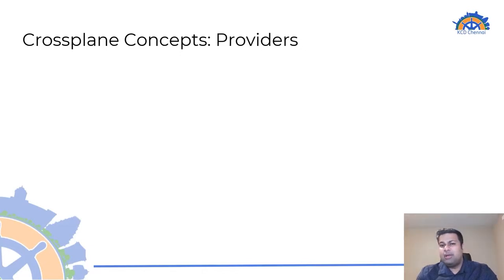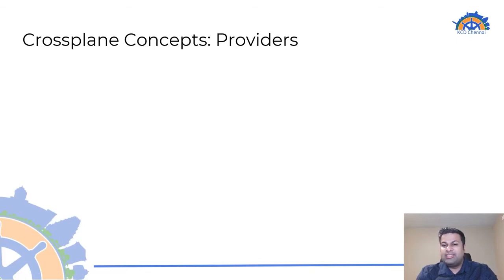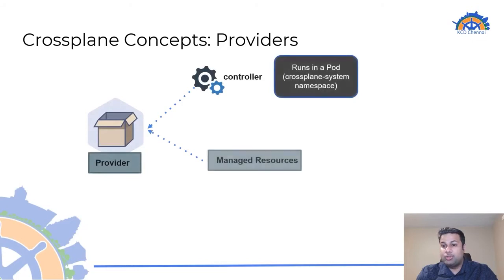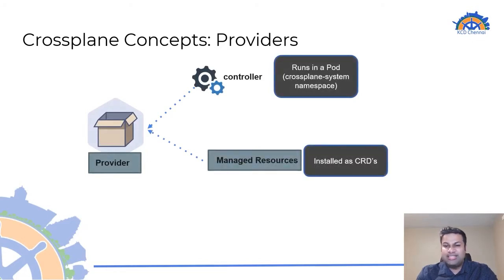Providers in Crossplane are similar in function to providers in Terraform — they facilitate Crossplane to provision the respective infrastructure resource on a specific platform. However, in Crossplane, a provider is a package that bundles two components together: a controller, which runs as a pod in the Crossplane system namespace, and a set of managed resources that are installed as custom resource definitions, or CRDs.